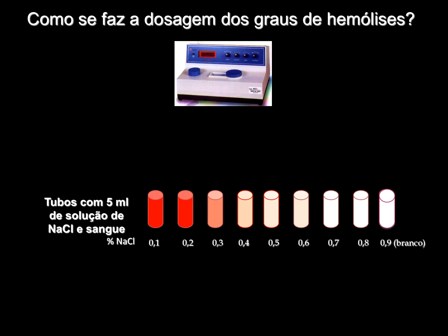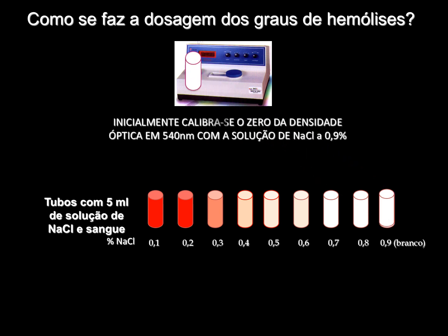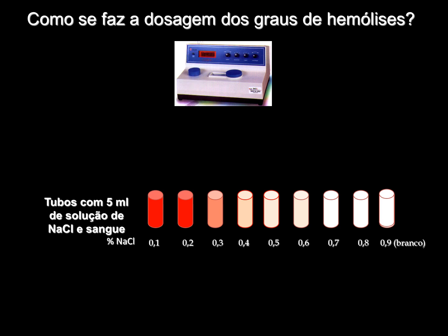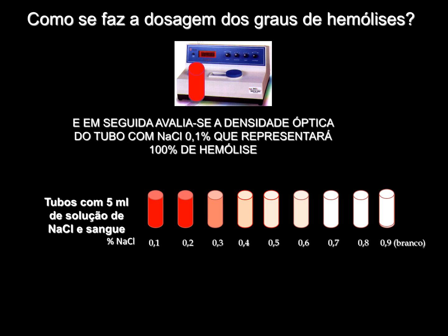No espectrofotômetro, usa-se a absorvância ou densidade óptica. Para zerar o aparelho, usa-se o sobrenadante do tubo 09, fazendo a calibração do zero da densidade óptica a 540 nanômetros. Para saber o máximo da hemólise — que seria 100% — usa-se o tubo 01, que fornecerá a densidade óptica representando 100% de hemólise.